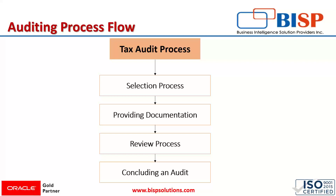Some electronic versions of documents are also acceptable. After providing the required documentation, the next step is reviewing the process, where examination of documents is conducted either by mail or in the taxpayer's home. If too many documents are required, in-person review is the best option. The last step is concluding an audit, wherein the IRS reaches a conclusion — there is no change, meaning the original amount owed or refunded in the tax will remain the same.